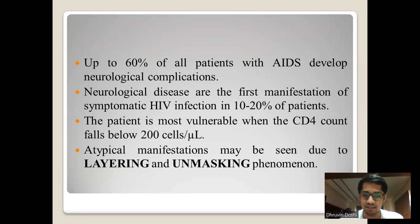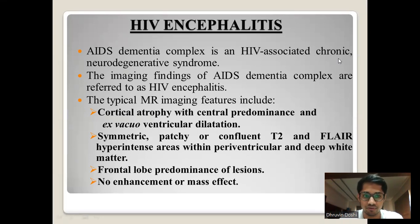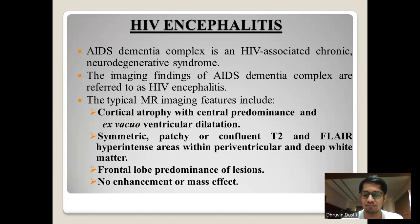Atypical manifestations may be seen due to layering or unmasking phenomenon. In HIV encephalitis, AIDS dementia complex is an HIV-associated chronic neurodegenerative syndrome. The imaging findings are referred to as HIV encephalitis. On typical MRI, we can see cortical atrophy with central predominance and ex-vacuo ventricular dilatation, symmetrical patchy or confluent T2 and FLAIR hyperintensities in periventricular or deep white matter, frontal lobe predominant lesions, and no enhancement or mass effect.